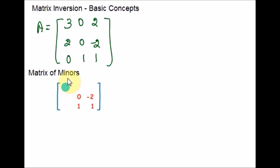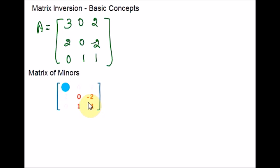Notice how I ignore the values in the current row and column and calculate the determinant using the remaining values. For the first element at row 1, column 1, I ignore those values and consider only the remaining portion: 0, negative 2, 1, and 1. The determinant is cross multiplication — 0 times 1 minus 1 times negative 2. There is a minus sign in the formula itself, so: 0 times 1 minus negative 2 times 1 equals 0 minus negative 2, which equals positive 2.